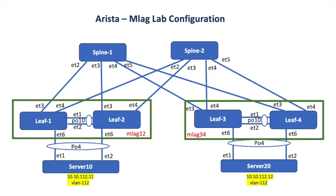In the previous video I showed how to configure MLAG between leaf 1 and leaf 2. Now we will see how failover scenarios work with MLAG in place. In this topology I have another leaf cluster, leaf 3 and 4, that also has MLAG configured. We will try to ping from server 10 to server 20, that is from 10.10.1.11 to 10.10.1.12. Both are in VLAN 112, so we need to extend this VLAN on port channel 4 and on the spine-facing interfaces as well.